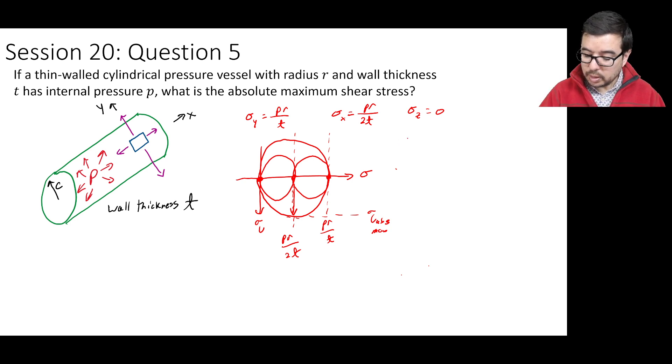And how do we calculate that out? Well, we have 2 times tau absolute max is going to be equal to the diameter, so that's going to be our sigma y minus 0, or we can write pr over t. So the absolute maximum shear stress is just going to be pr over 2t, like that.